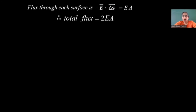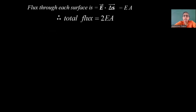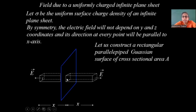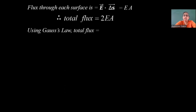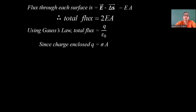Now let us apply Gauss's law. Using Gauss's law, the total flux equals total charge enclosed divided by epsilon 0. The total charge enclosed is the surface charge density sigma multiplied by the area A, so sigma A. Therefore total flux equals sigma A upon epsilon 0.